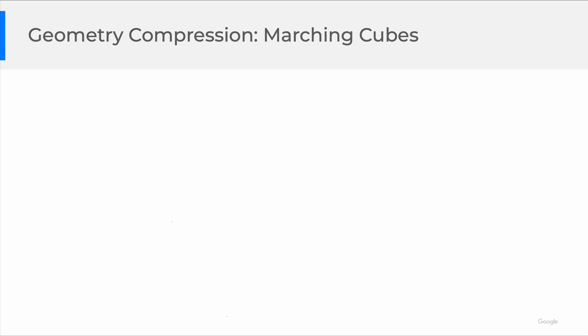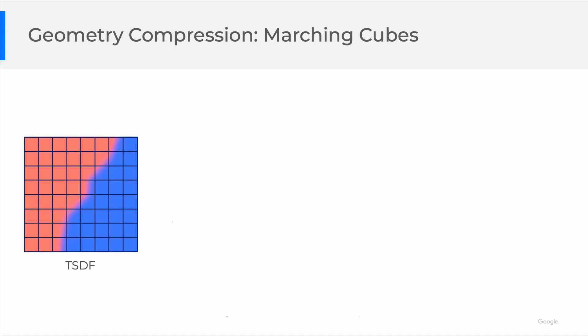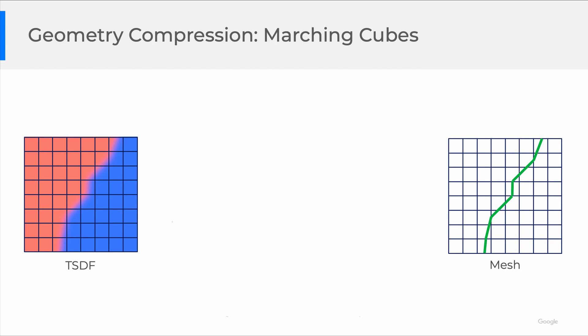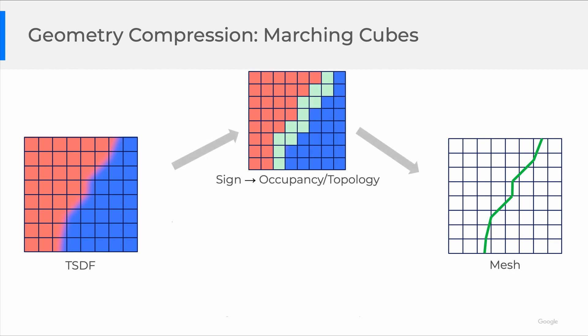Our geometry compression was inspired by the matching cubes, which can convert a signed distance field into a triangle surface. Here is a 2D toy example. Think of it as a slice taken out of the 3D volume, where each corner is a voxel that contains the sign distance to the surface. The matching cubes algorithm first looks at the signs of the voxels and figures out the occupancy based on sign changes.